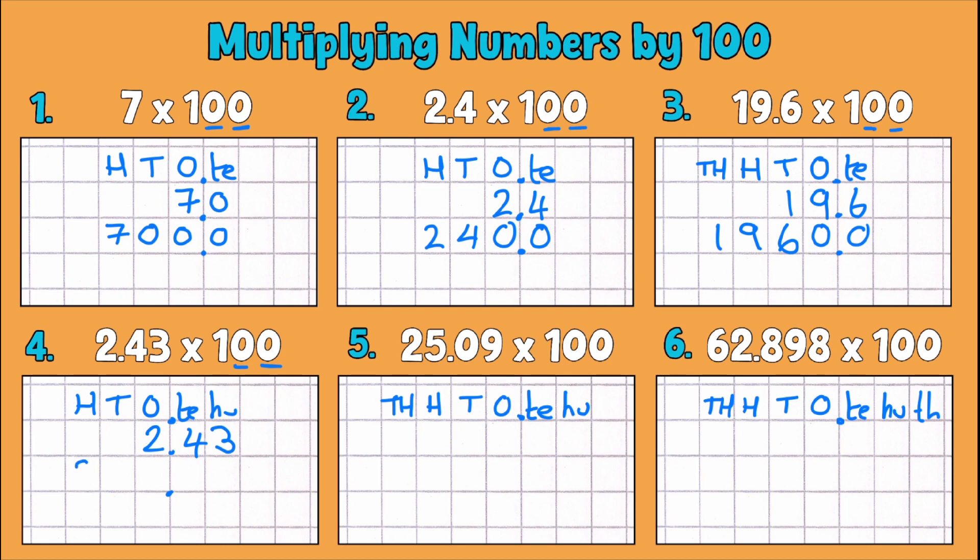So everything moves two places over to the left just like we did on the last examples. So our 2 becomes 200. Our 4 tenths becomes 40 and our 3 hundredths becomes a whole 3. So 243 or 243.0. Same number.